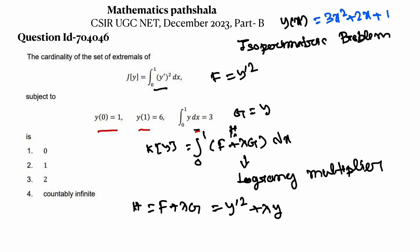This extremal is unique. So the cardinality of the set of extremals is 1, meaning option 2 should be true and the other options should be false. Thank you for watching this video.